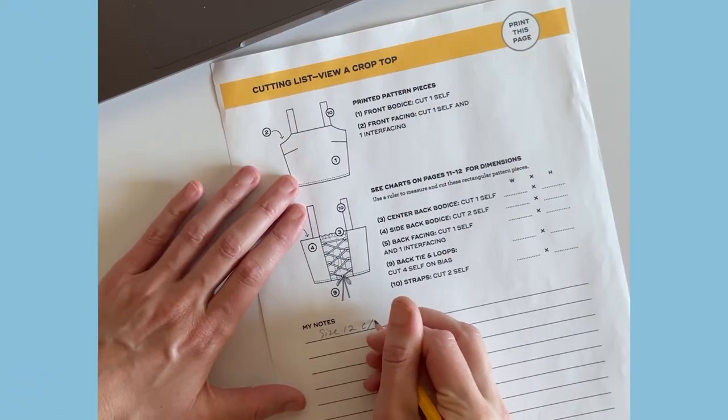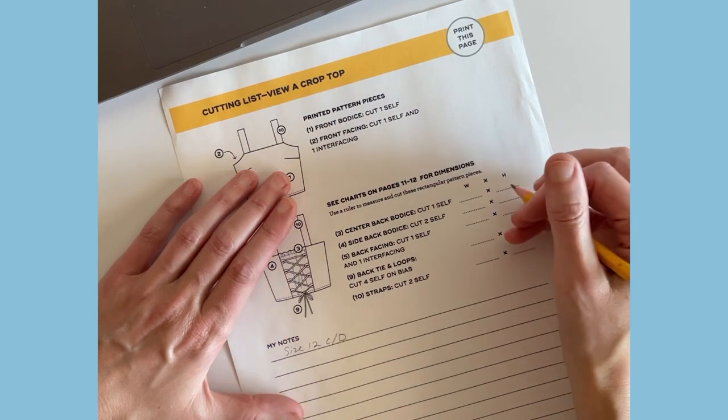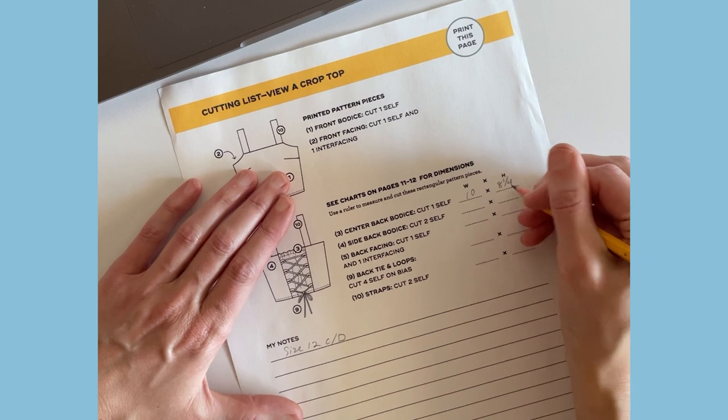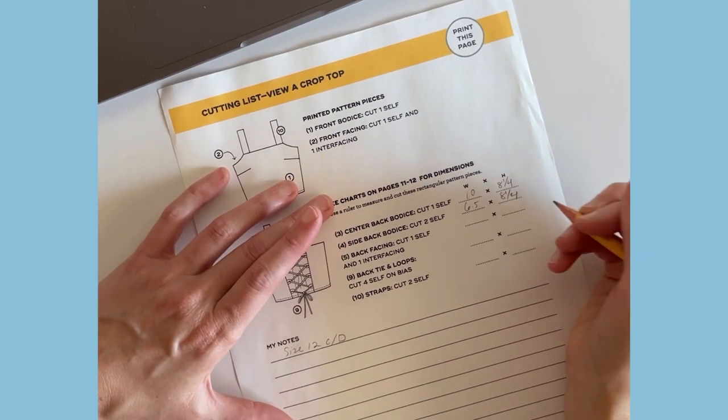In the instruction booklet, you'll find a worksheet for each view that you can print out and write down all the dimensions for the pattern pieces, keep track of those pattern pieces, and make any notes for changes that you would like to make to the pattern.